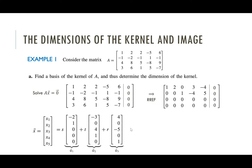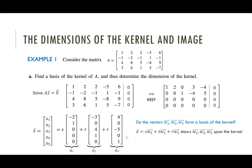Are these vectors w1, w2, w3 a basis for the kernel? Does this mean the kernel is three-dimensional? Well, they definitely span the kernel — because any vector x in the kernel can be written as s·w1 + t·w2 + r·w3. So any vector in the kernel is a linear combination of those vectors.